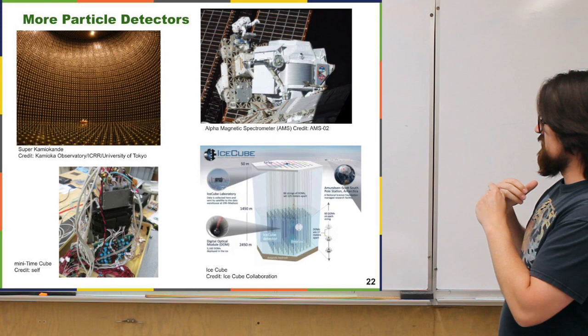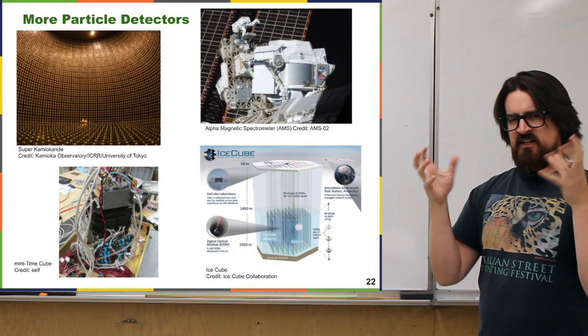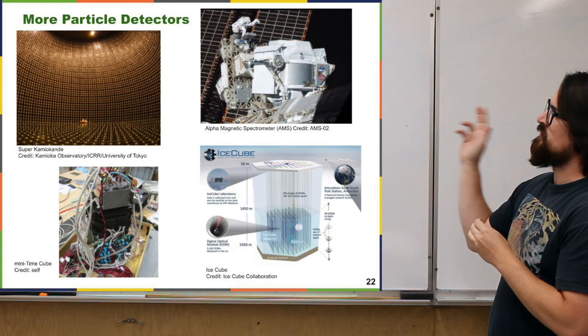Some examples are like Super-Kamiokande, or Super-K, which is basically a giant vat of super-pure water with really specialized kind of cameras almost looking in at this water. In that picture you can see two little guys on a raft inside the detector — right now it's not filled up with water. I think they're cleaning the faces of these cameras.